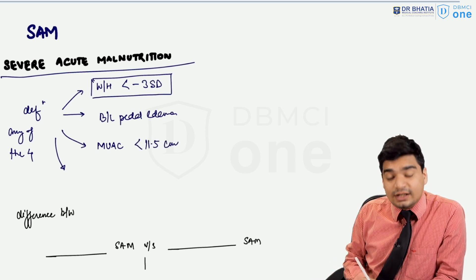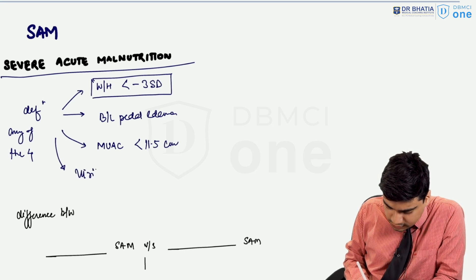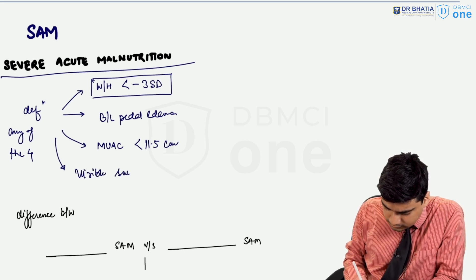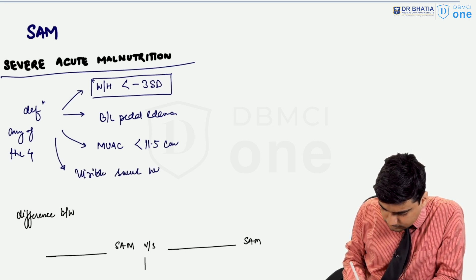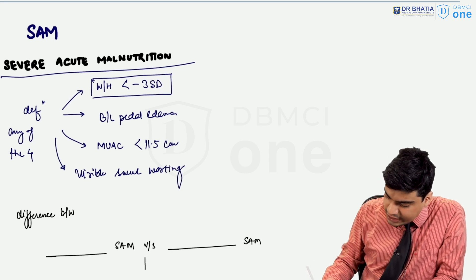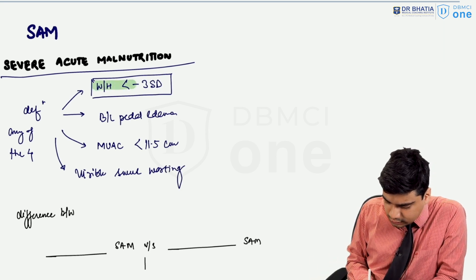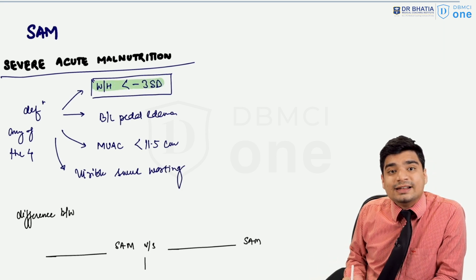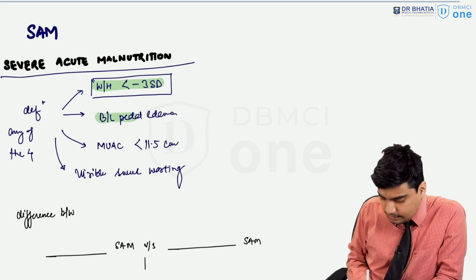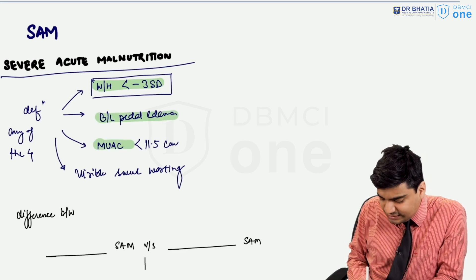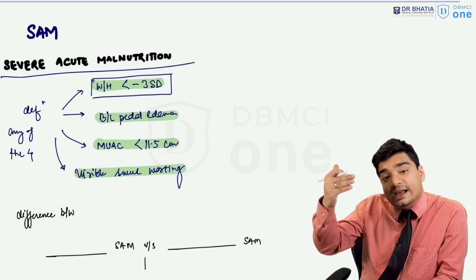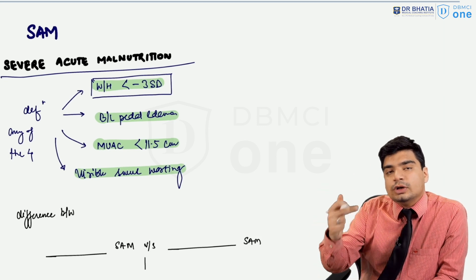The fourth criteria is if there is visible severe wasting. So if any of these four criteria—weight for height less than minus three standard deviation, bilateral pedal edema, MUAC less than 11.5 centimeters, or visible severe wasting—is present, then you will call the child as having severe acute malnutrition.